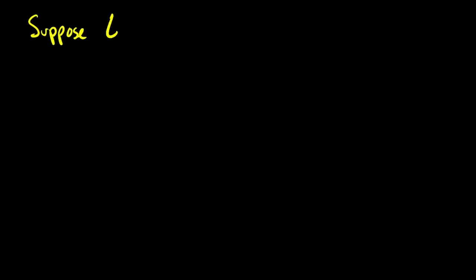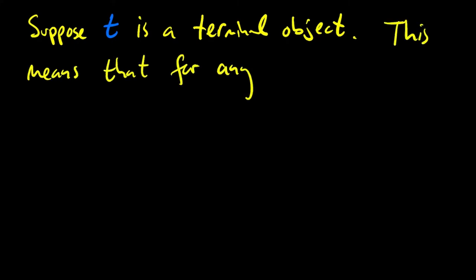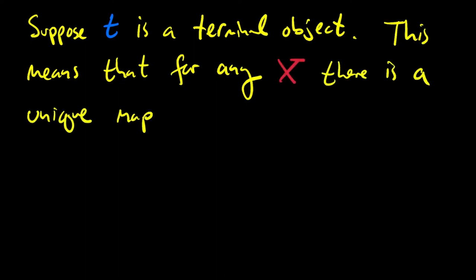You can understand why limits and co-limits are unique by looking at the simplest example of a limit. That's a terminal object — the limit of an empty diagram. As a reminder, an object t is a terminal object in a category if, for any object x, there's a unique morphism from x to t.